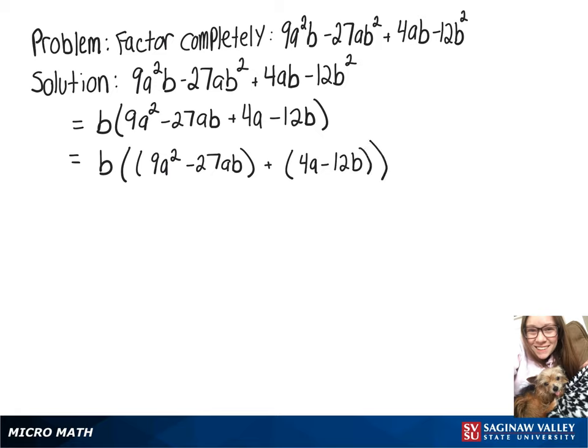Now that we have our groups, we want to see what we can factor out. We still have b on the outside, and from our first group, we can factor out 9a, which leaves us with (a - 3b).